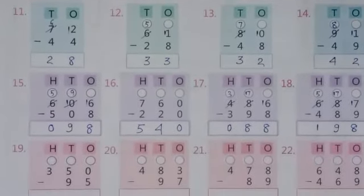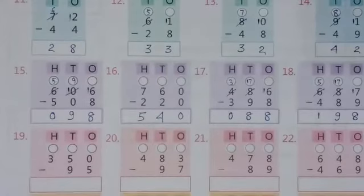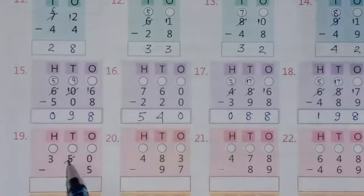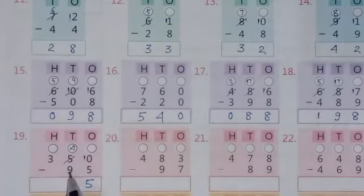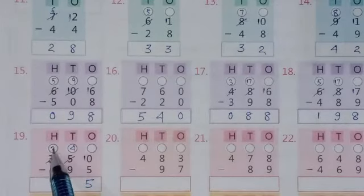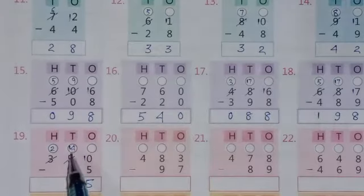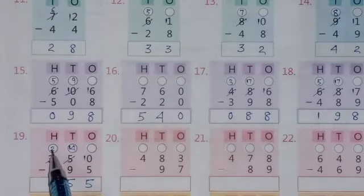See the next question number 19. Here 0 minus 5 is not possible, so borrow from this digit — this will become 4 and here will be 10. Now 10 minus 5 equals 5. Then 4 minus 9 is not possible, so borrow from this digit — this will become 2 and here will be 14. Now 14 minus 9 equals 5, and this 2 will repeat as it is.